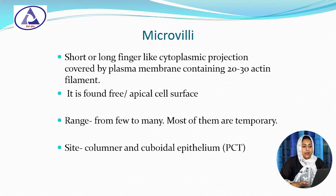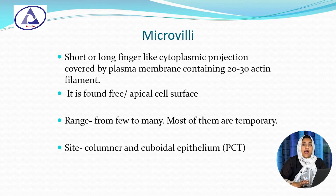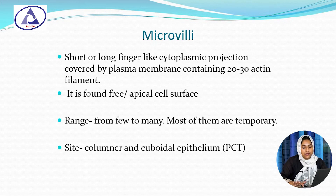What are the structures of microvilli? Microvilli are short or long finger-like cytoplasmic projections covered by the plasma membrane, containing 20 to 30 actin filaments. They are present on the free or apical cell surface. In each cell, the microvilli may be few to many, and most of them are temporary. For example, microvilli are found in the proximal convoluted tubule, on columnar epithelium and cuboidal epithelium.